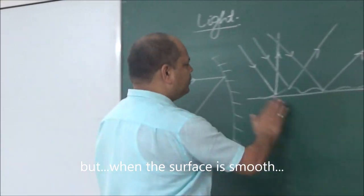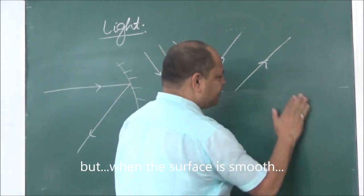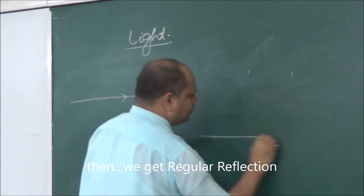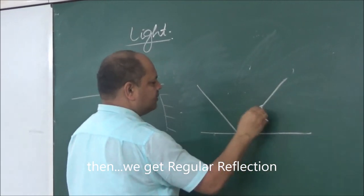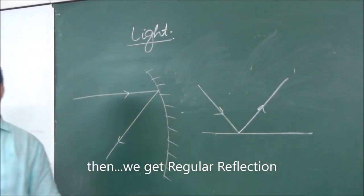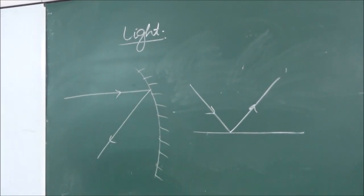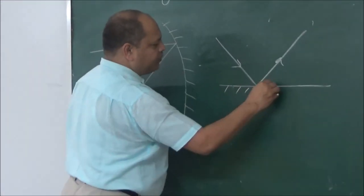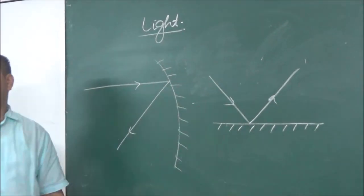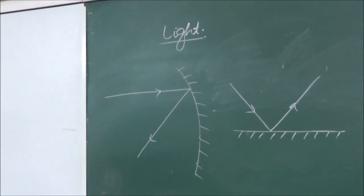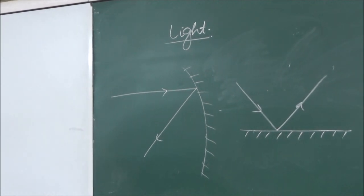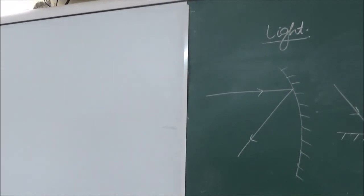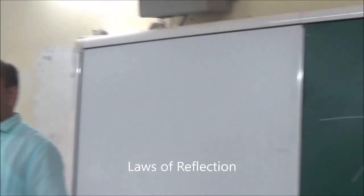But when the surface is smooth, then we get regular reflection. You can see this with a plane mirror — when the surface is smooth, the reflected rays follow a regular pattern. So we have regular reflection, for example with a plane mirror.